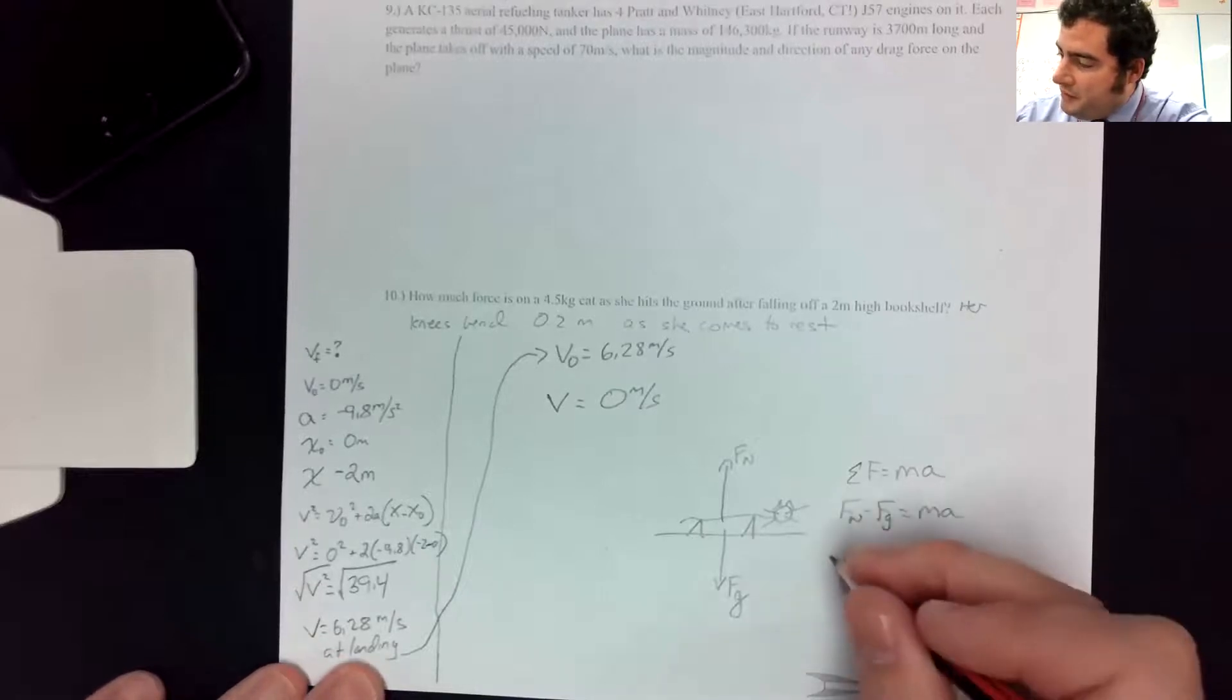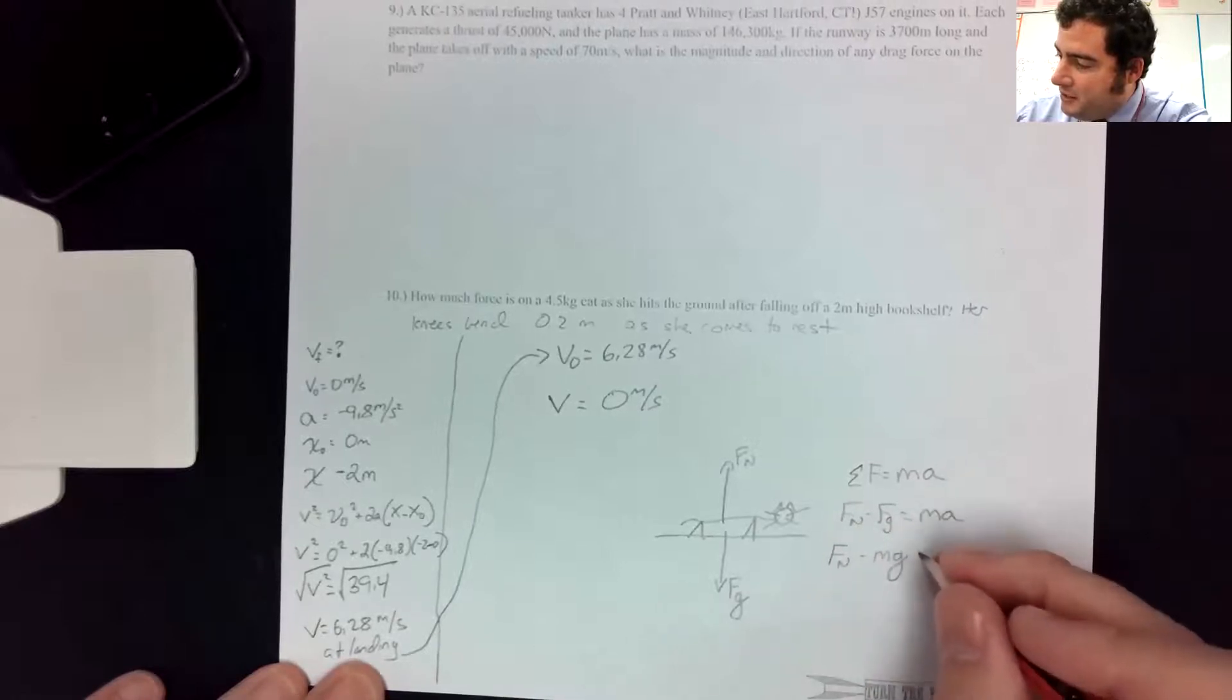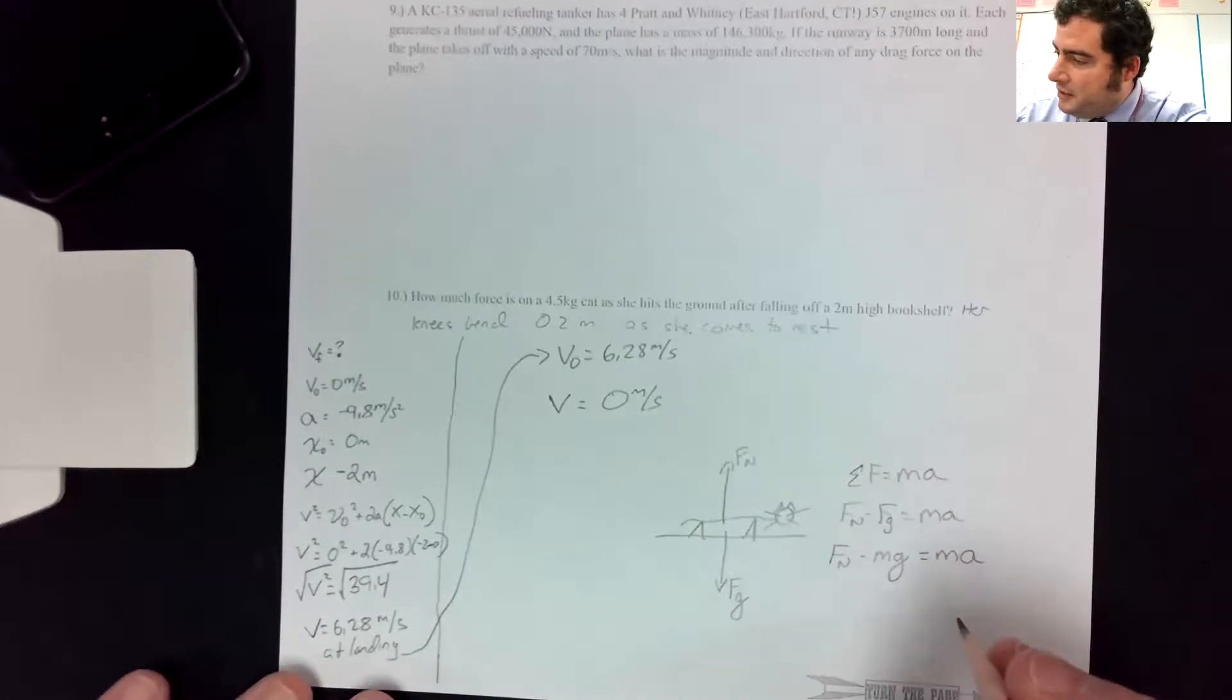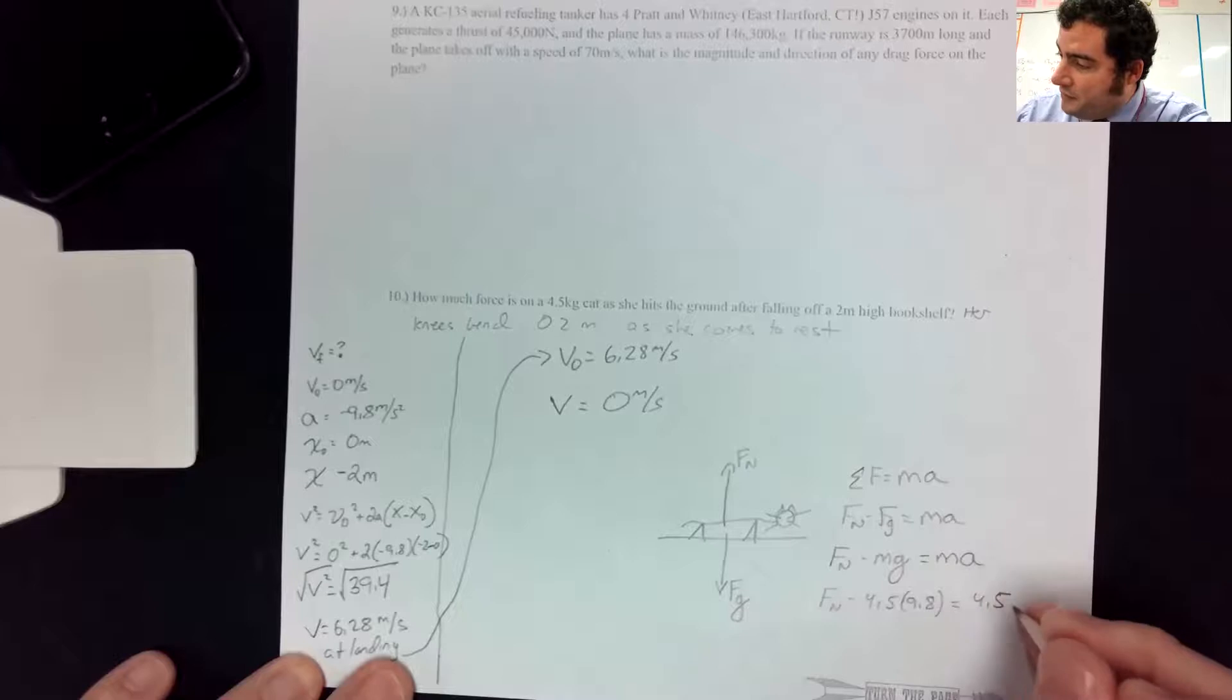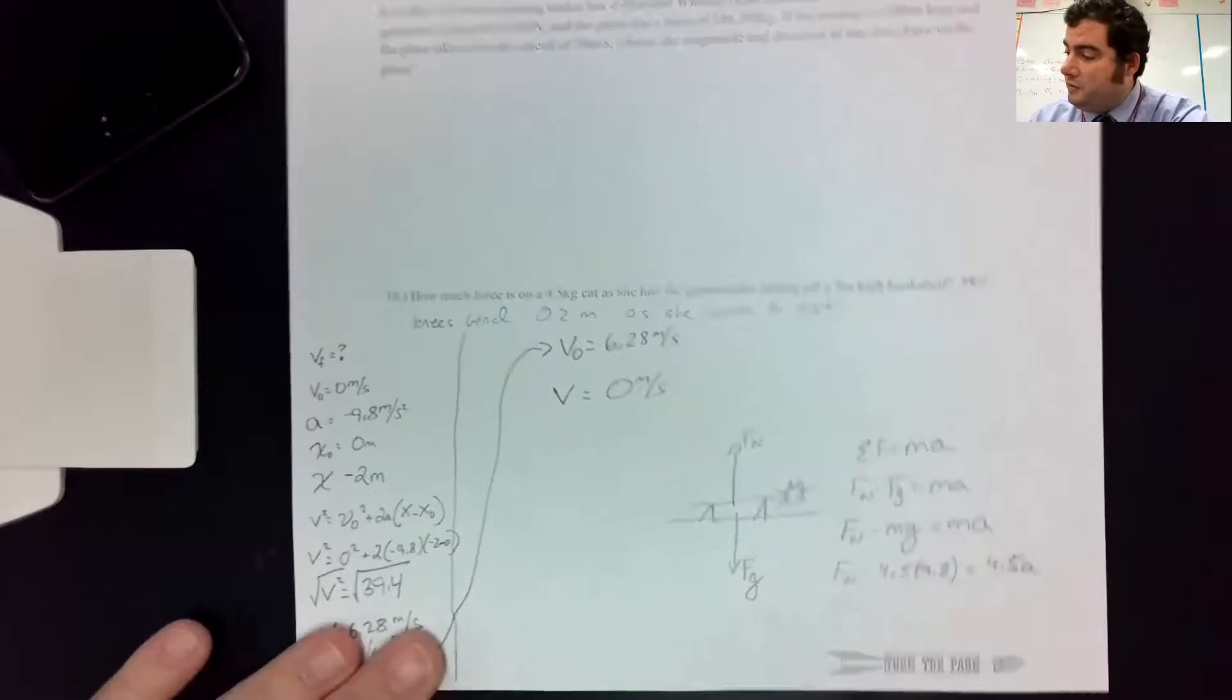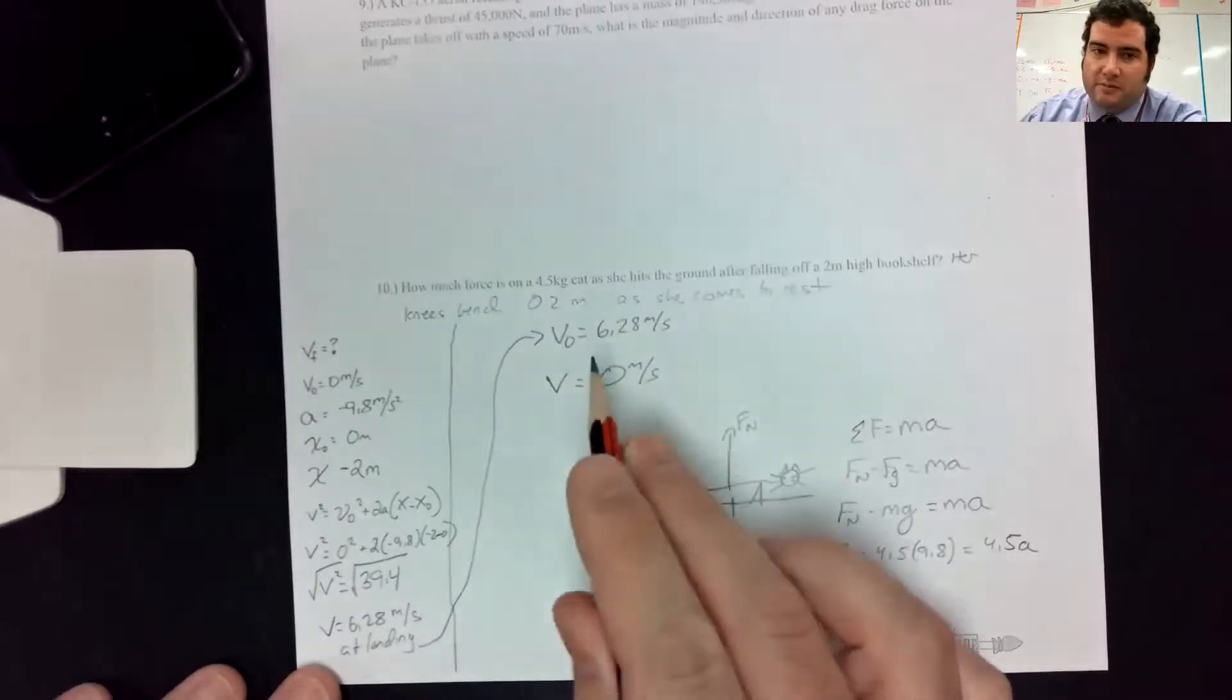And I have Fn minus Fg is MA. It's asking for Fn. I don't know it. So the force of gravity is always mass times 9.8. So now I think I can plug in Fn minus 4.5 times 9.8 equals 4.5a. All right, so I don't have Fn and I don't have a. So that means what I need to do is I need to solve for a using my motion information.